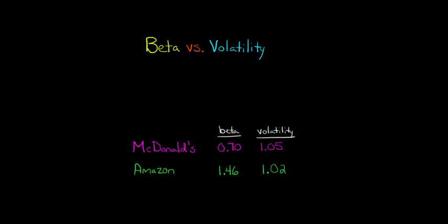Sometimes people get confused between beta and volatility because both are measures of risk. You might see a firm like McDonald's having a beta of 0.7 and a volatility of 1.05, and then see another firm like Amazon having a higher beta and yet a lower volatility.